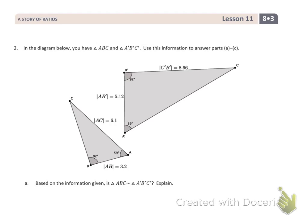This is exercise two. In the diagram below, you have triangle ABC and triangle A'B'C'. Use this information to answer parts A through C. Part A asks: based on the information given, is triangle ABC similar to A'B'C'? We're going to look at the angles and the side lengths. I notice that there's a 92-degree angle and a 59-degree angle. By the angle-angle criterion, I know these two are similar triangles.